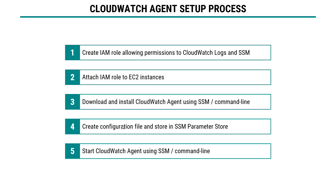Coming to the process of installing and configuring CloudWatch Agent, these are the steps we need to perform. First, we need to create an IAM role allowing permissions to collect metrics from EC2 instances and integrate them with Systems Manager and CloudWatch Logs. Next, attach this role to our EC2 instances. For on-premise servers, we can create an IAM user, assign the role, and use access keys to configure the agent. Next, download and install the agent package — either using Systems Manager or manually. We can also create the configuration on the first server, store it in SSM parameter store, and reuse it on subsequent servers. Finally, we start the agent using SSM or command line.